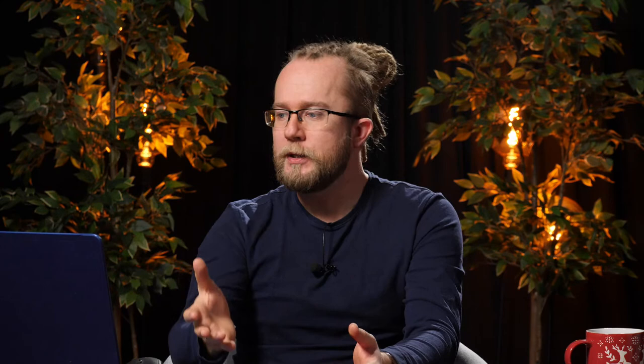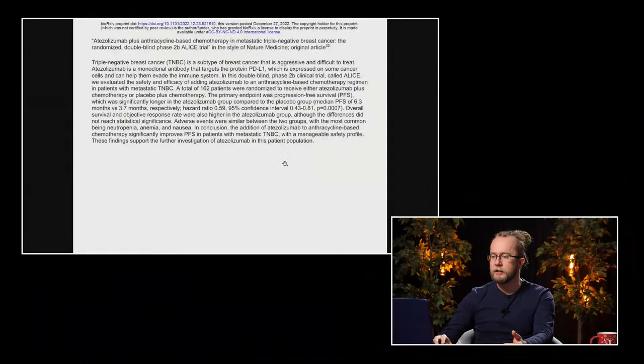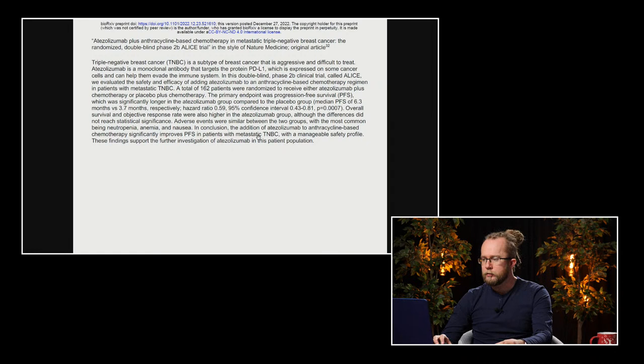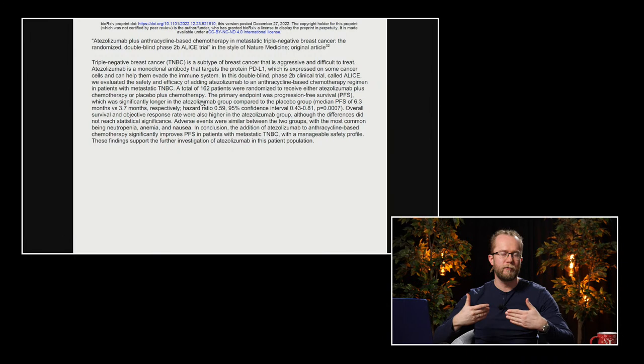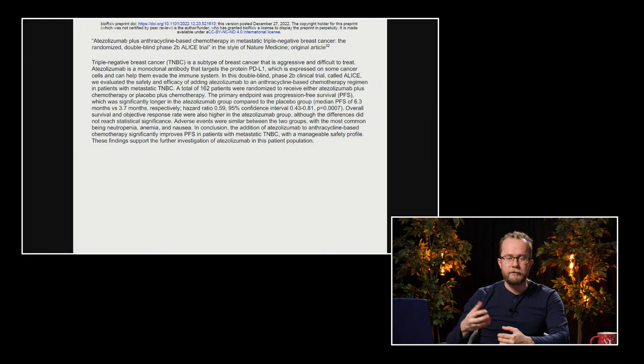Dużo bardziej interesujące jest to, że ten algorytm musiał generować konkretne liczby. Na przykład musiał wymyślić wyniki. W tych abstraktach roi się od liczb. Zbadano to na grupie 162 pacjentów. Nie było tych 162 pacjentów. Udało się to ze skutecznością 0,59. Przeżywalność w jakiejś tam grupie wynosiła 6,3 miesiąca versus 3,7 miesiąca, krótko mówiąc. Ten abstrakt wygenerowany przez algorytm na temat raka piersi - on został wygenerowany, czyli wszystkie liczby, które tu się znajdują, wszystkie nazwy, wszystkie terminy techniczne, one musiały zostać wygenerowane. W związku z czym, bardzo ciekawa jest dla mnie ta wiadomość, że te algorytmy potrafią już generować wiarygodne liczby.